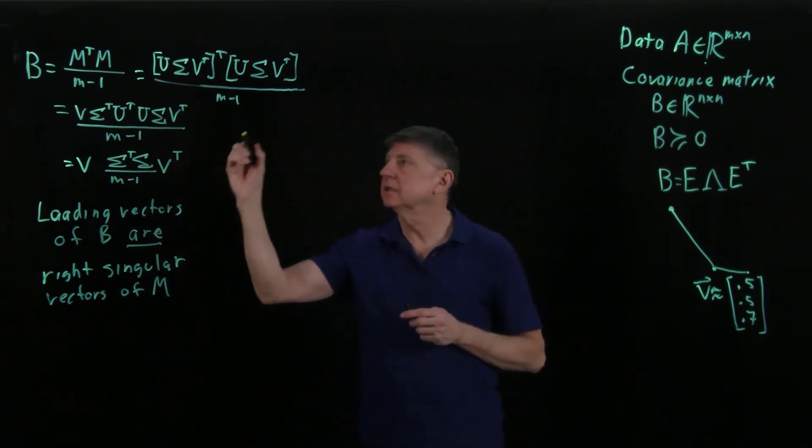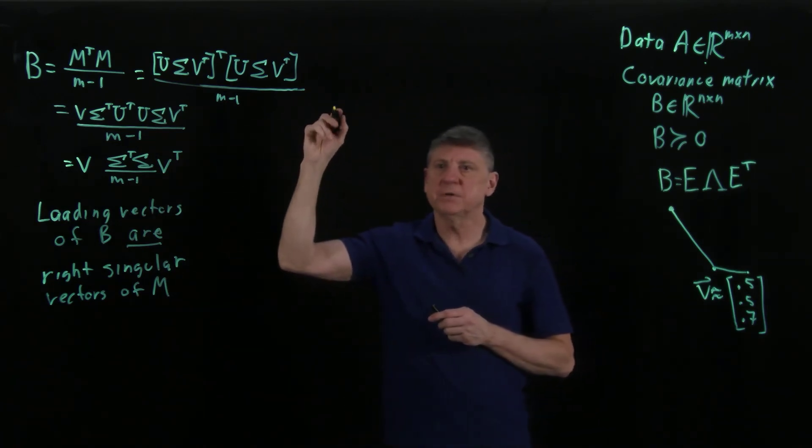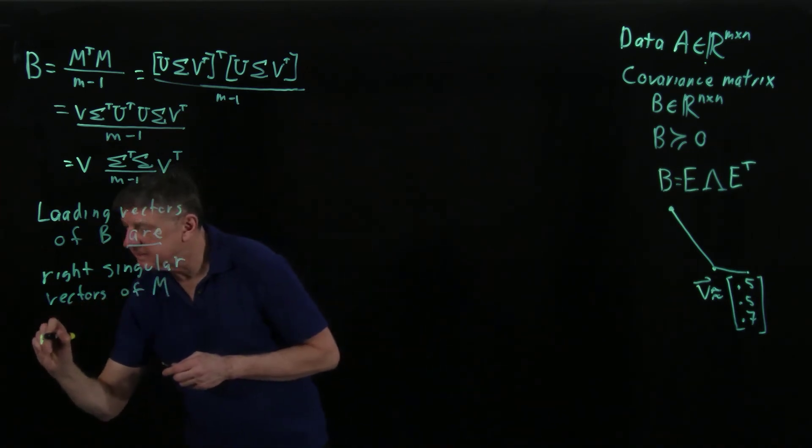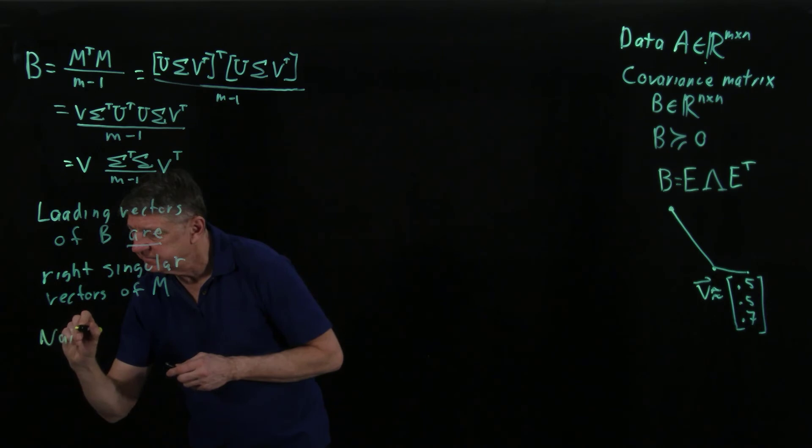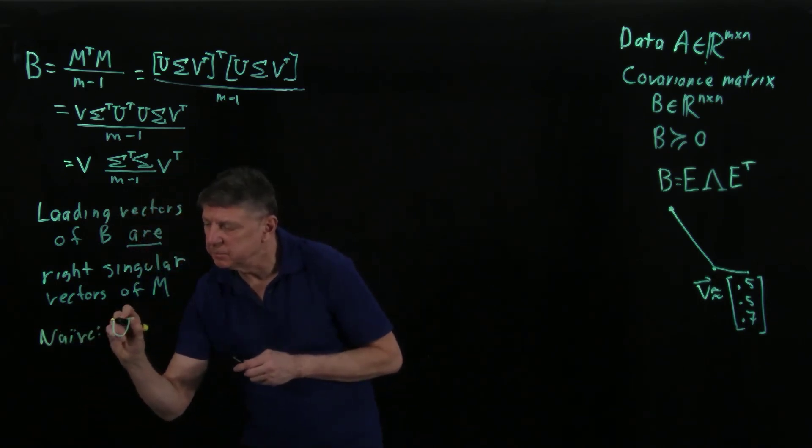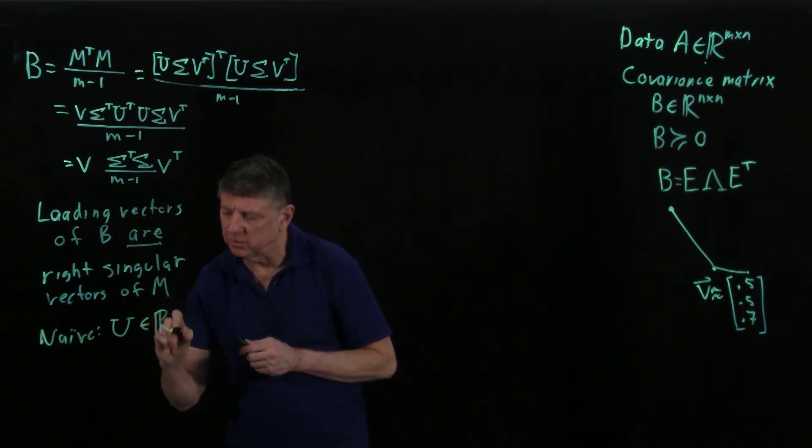So let's see what that computation would look like. So that computation would be, so I'll call this naive. What we would get is we would get the U matrix, and how big would that U matrix be? Well, it's all real numbers.